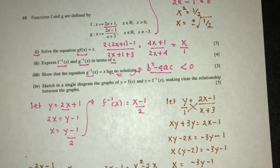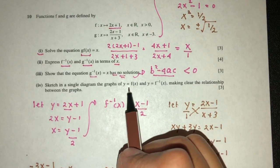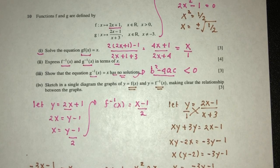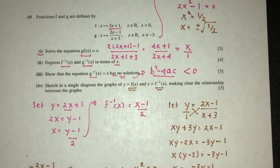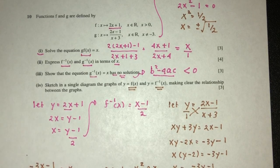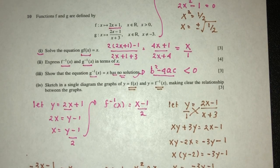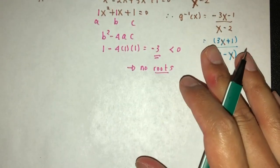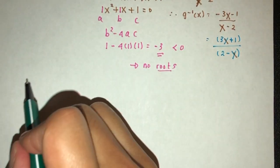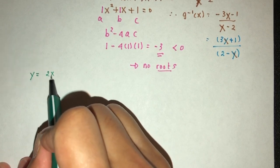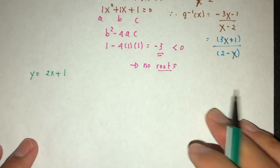Now for the last one, we have to sketch the graph of y and inverse of, so f of x and inverse of f of x, making clear the relationship between the graphs. But the relationship between inverse and the graph is a reflection in the line y equal to x. It's always going to be the case. So let me kind of draw the graph here. So let's first, we have f of x, which is y equal to f of x is 2x plus 1. It's simply a straight line.